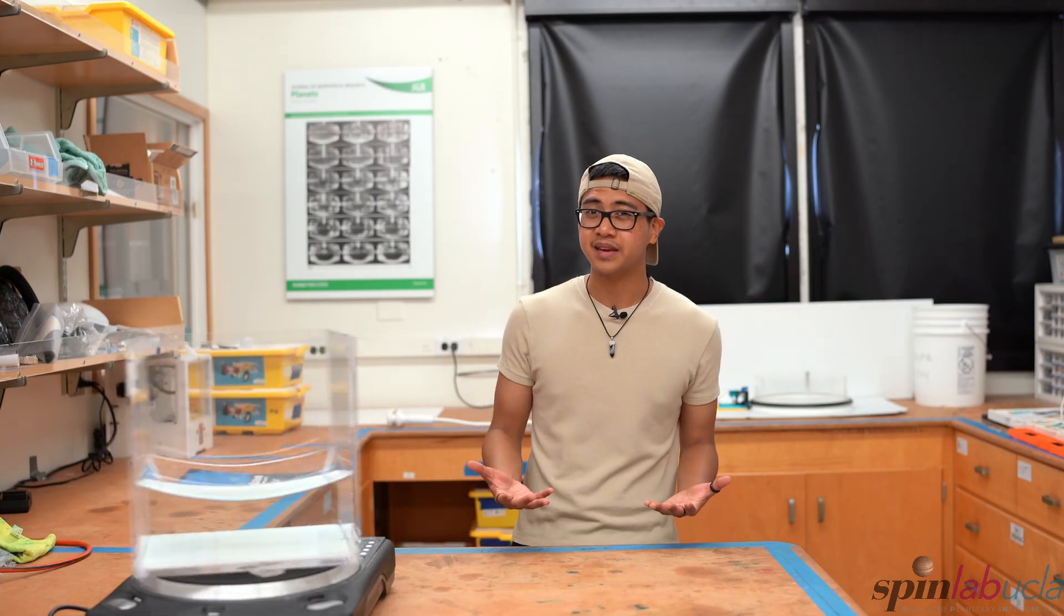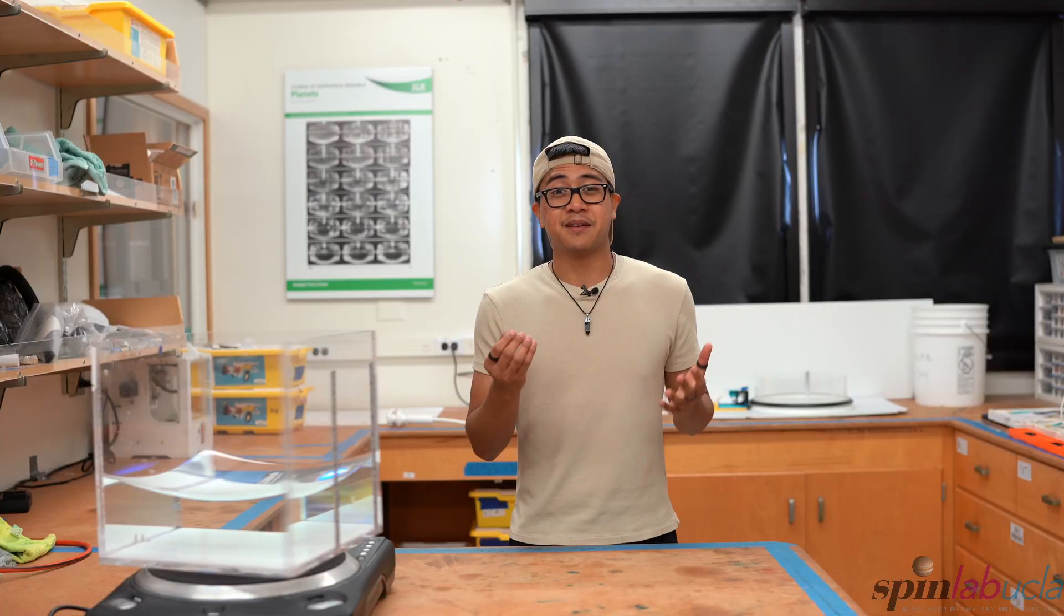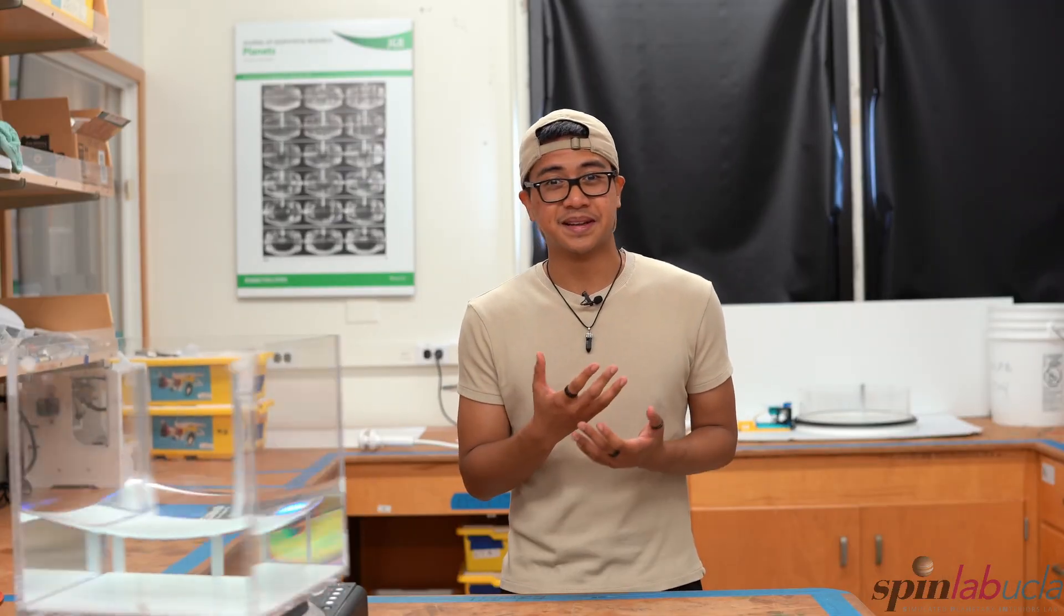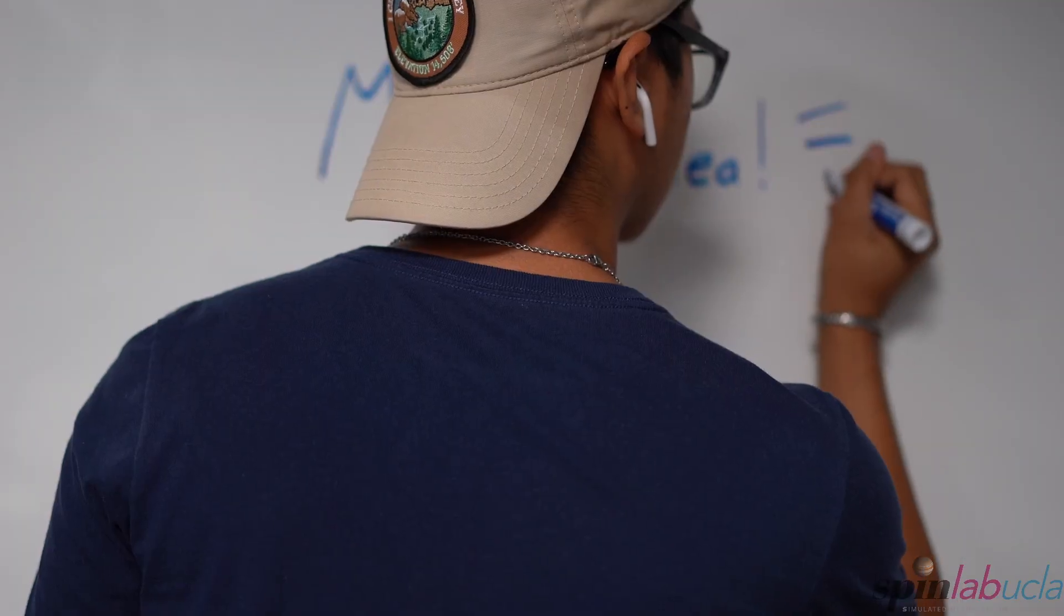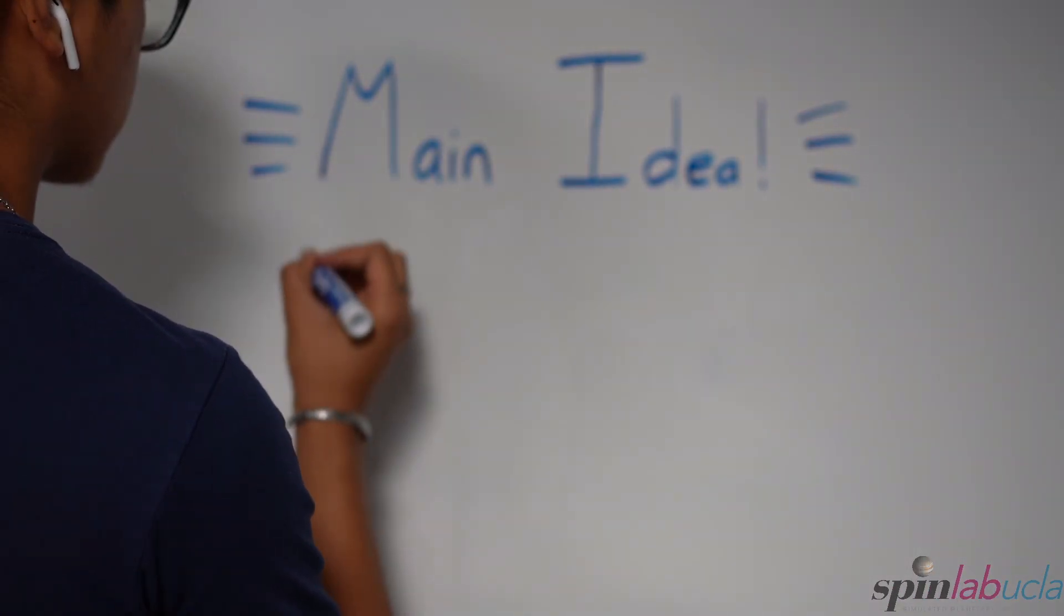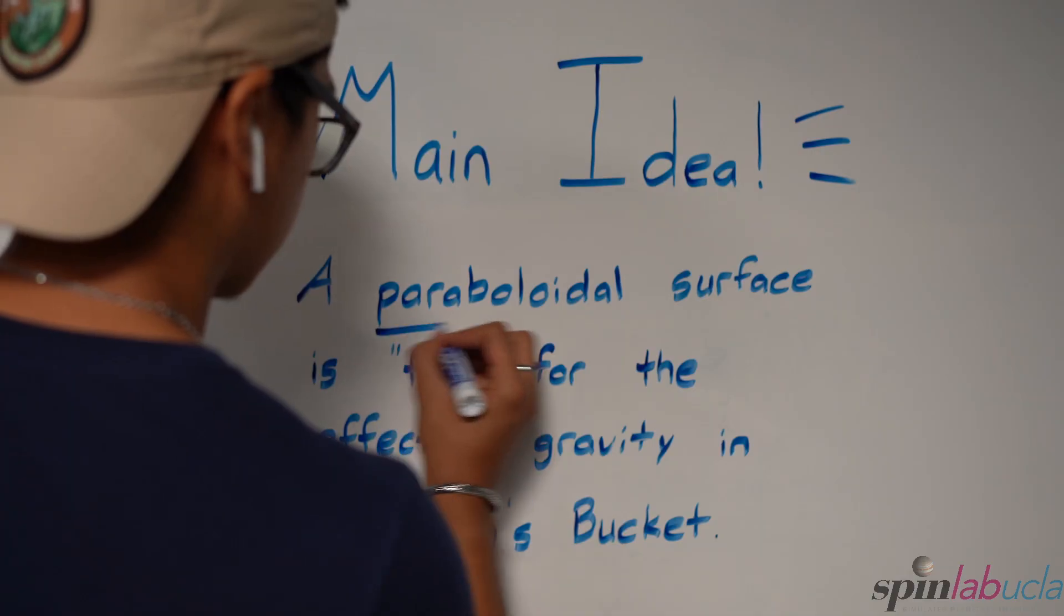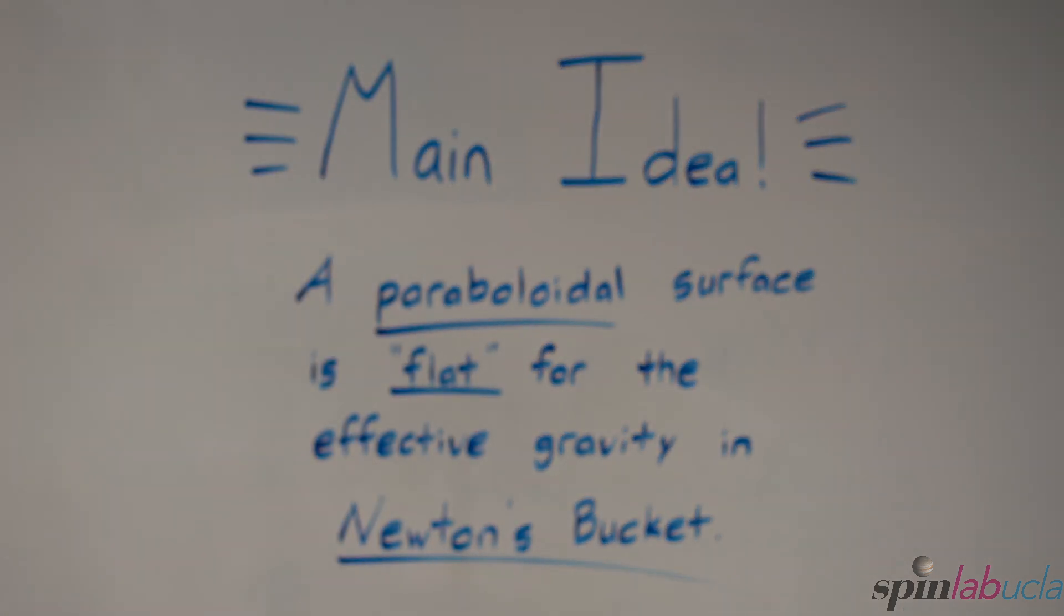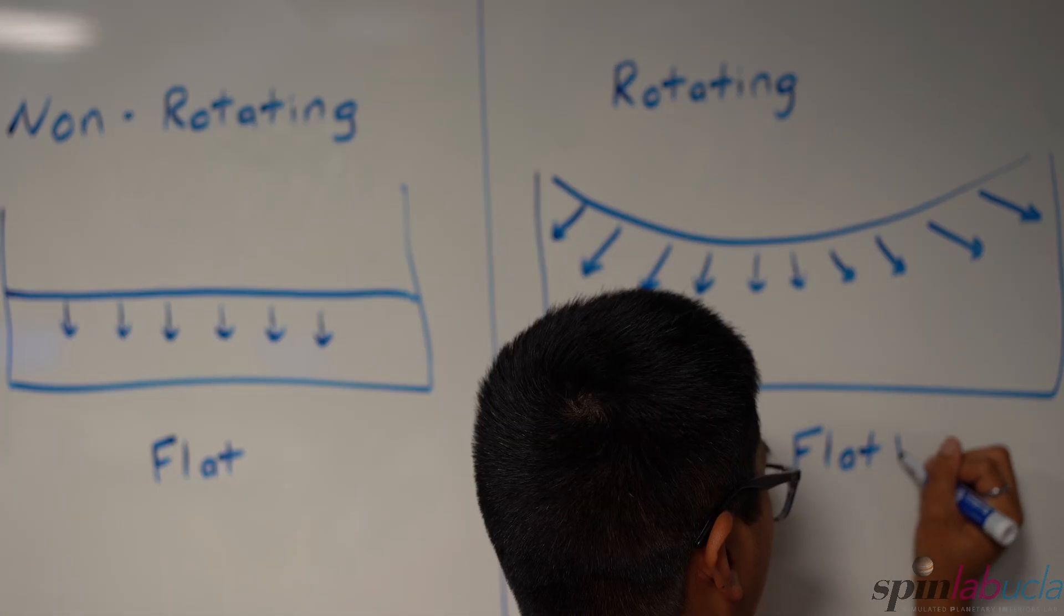What does this mean? Here's the big main idea of the video: in the same way that a spherical surface is flat given a planet's radial gravity, a paraboloidal surface is flat for the effective gravity in Newton's bucket. This means that fluid parcels in a rotating paraboloid all remain stationary relative to the rotating tank, which I think is pretty cool.